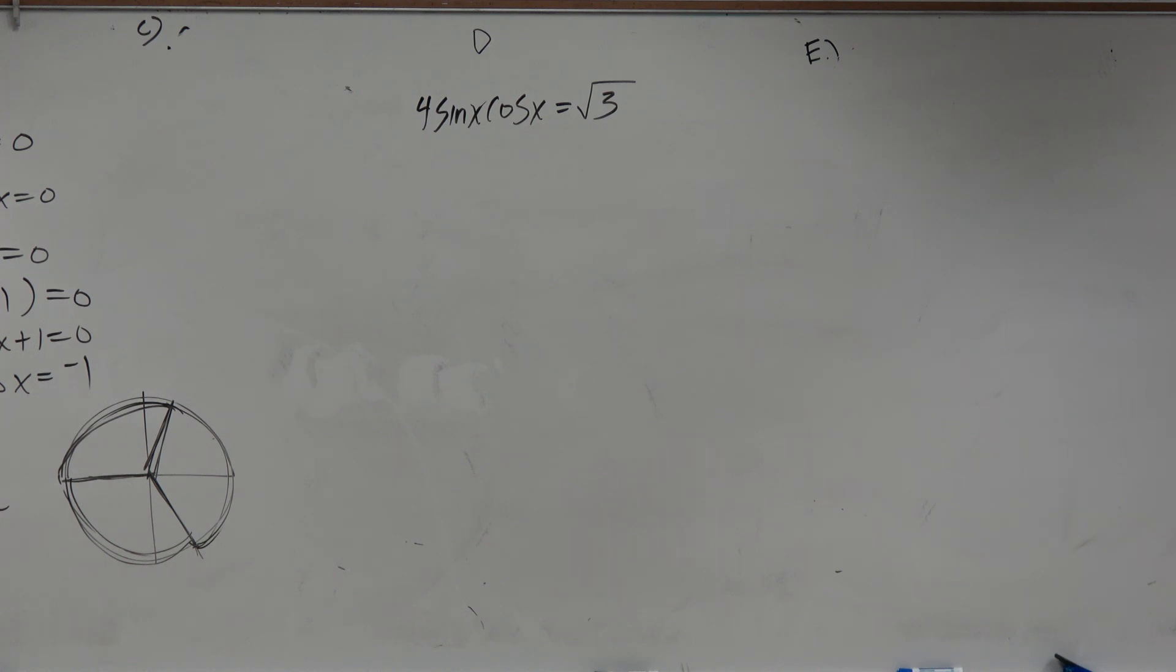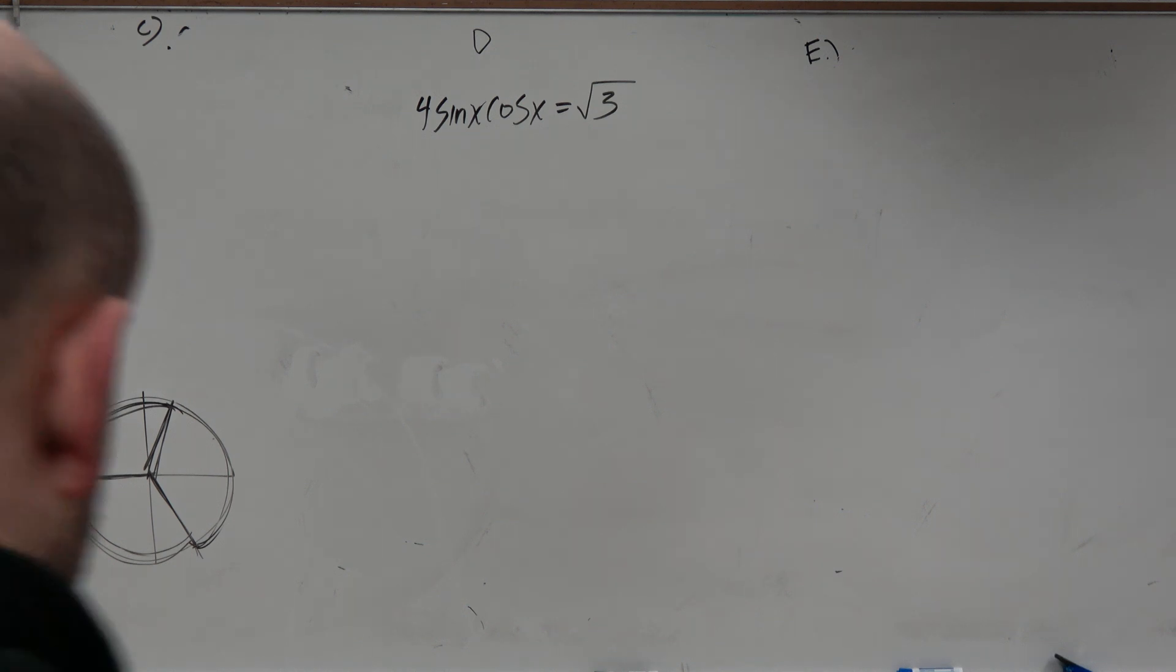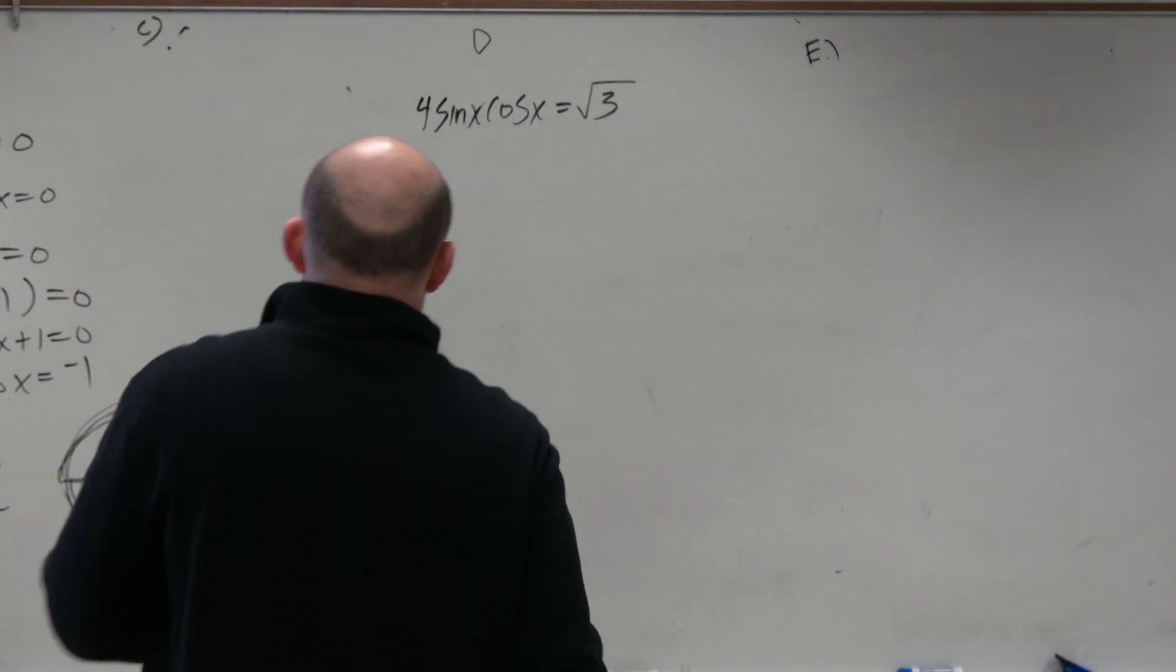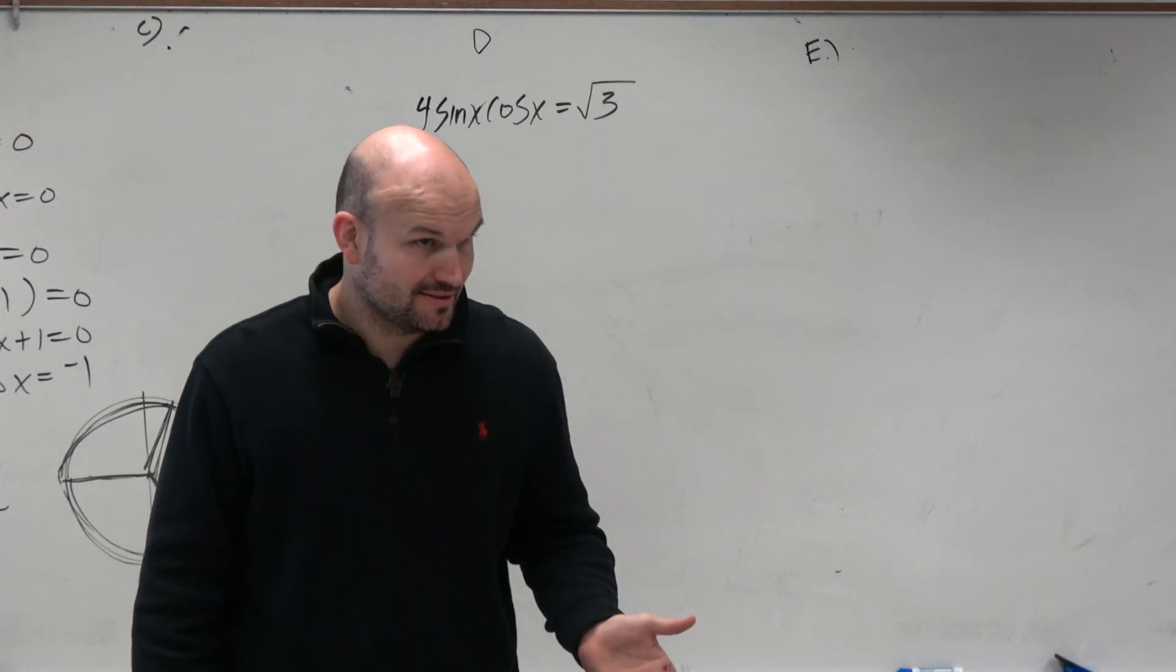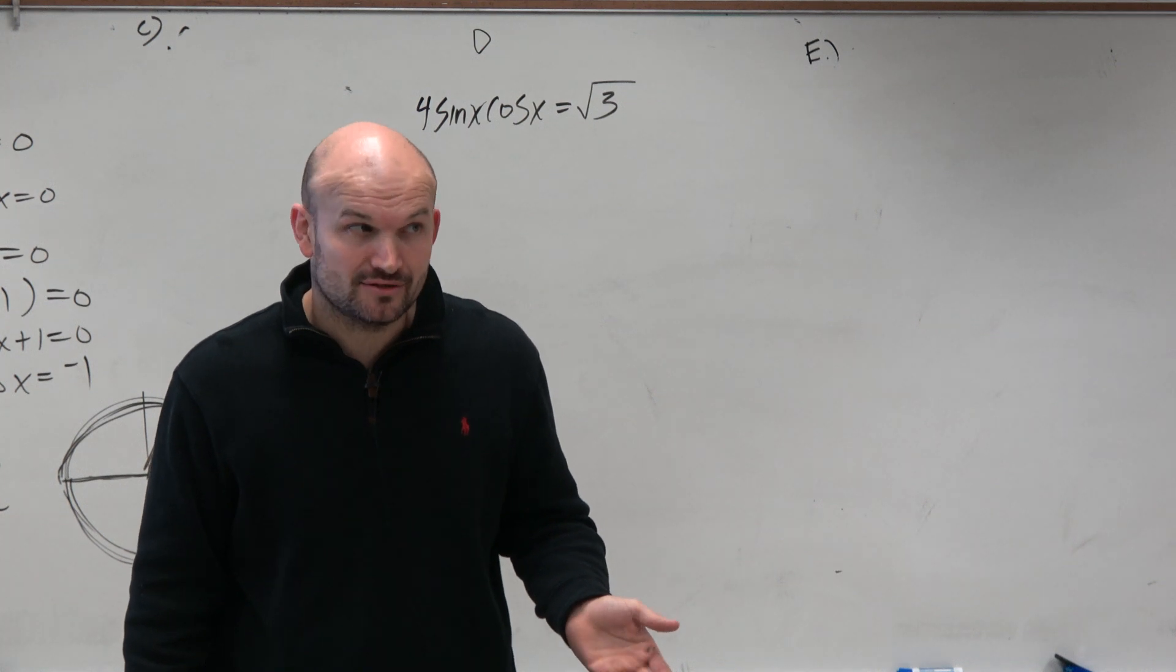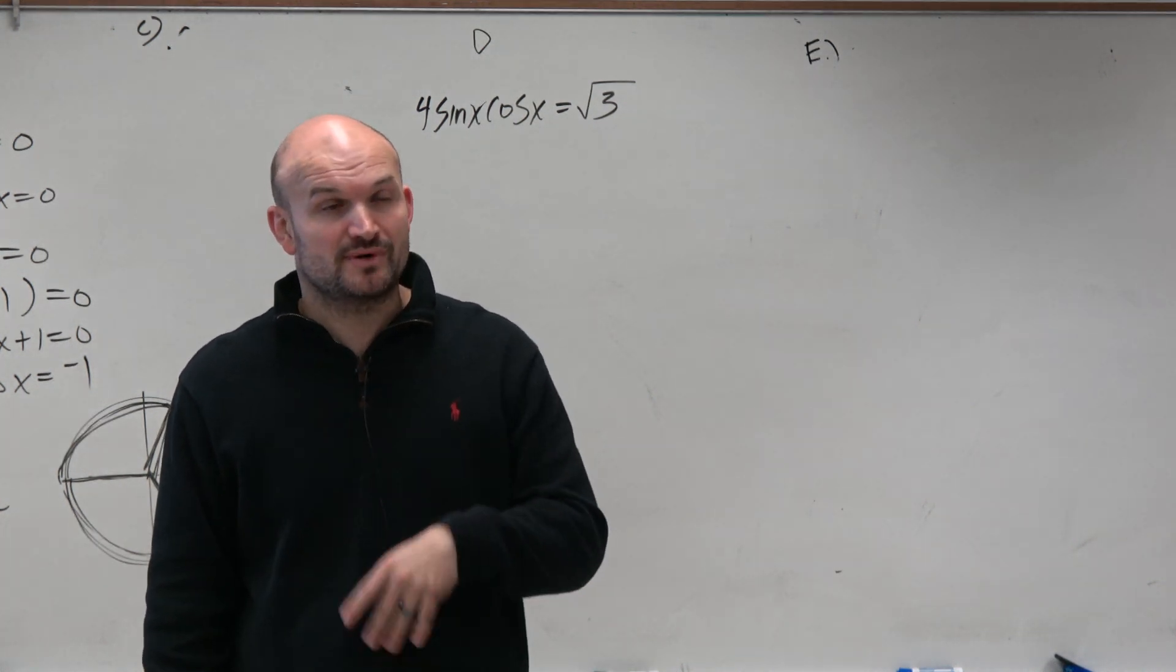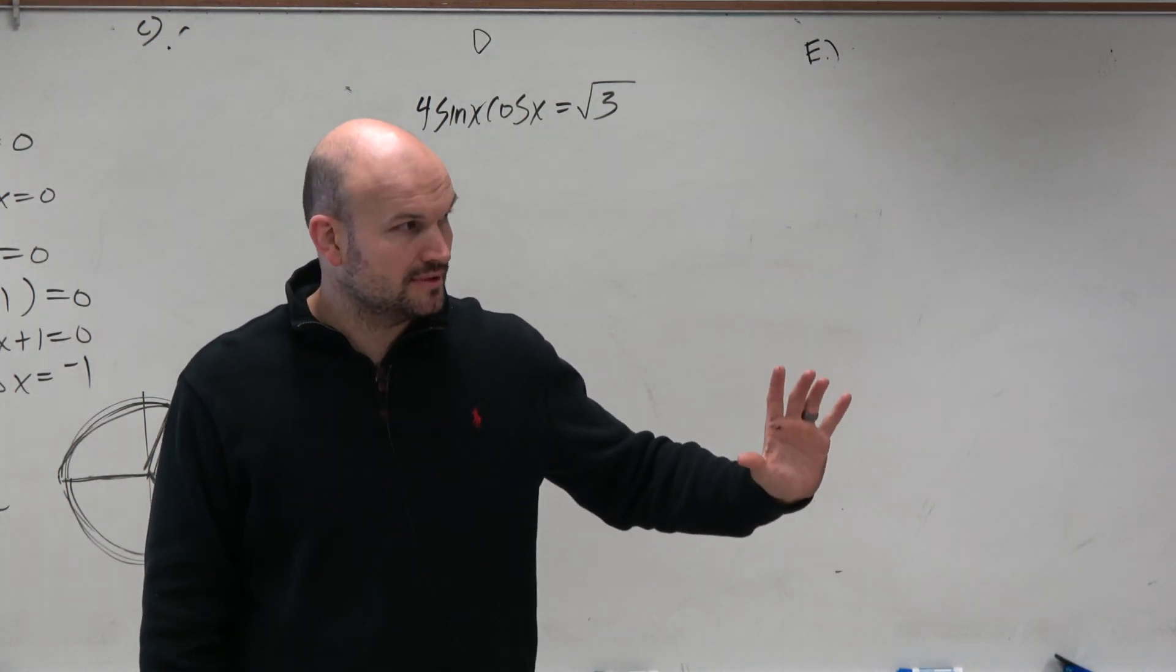So let's go through this one. 4 sine of x cosine of x equals square root of 3. Now this one's kind of interesting because we don't have a product equal to 0, so we can't apply the zero product property. So don't try to do that. Zero product property only works when you have a product equal to 0.